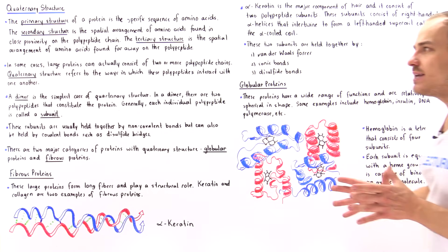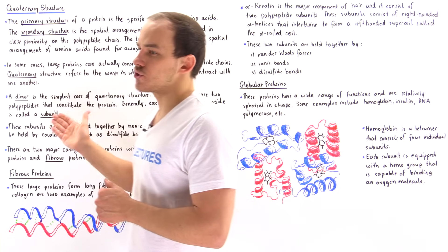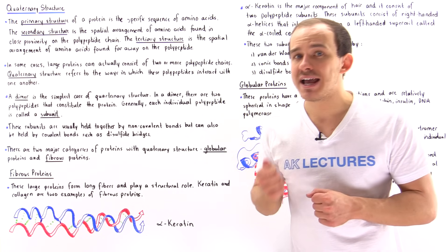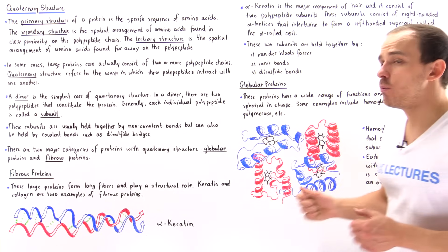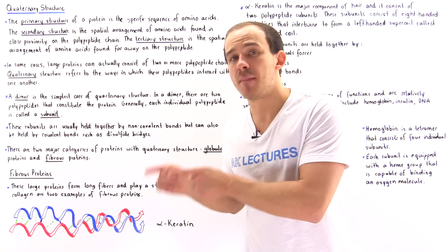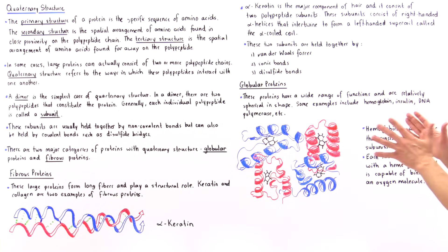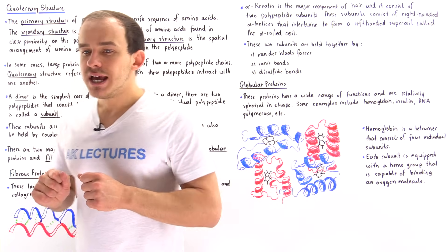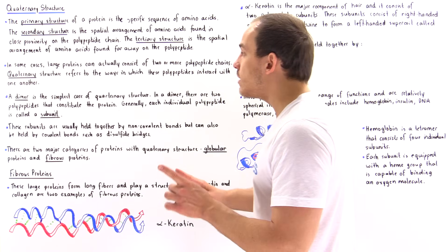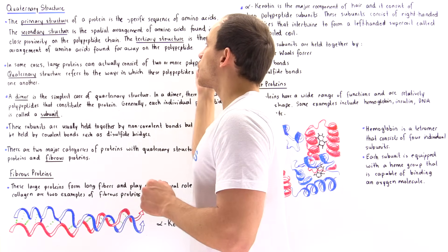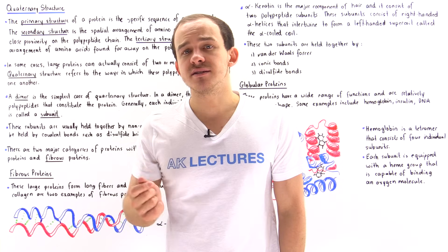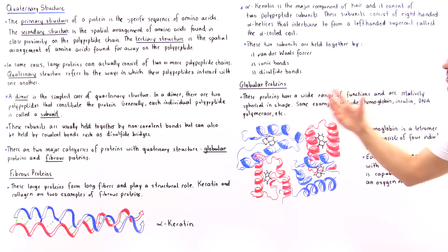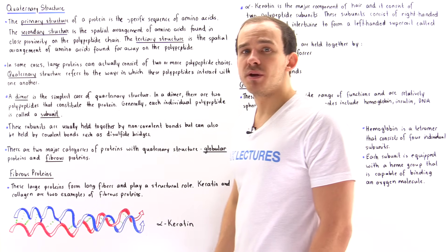Not all proteins contain quaternary structure. For example, myoglobin — an important protein in our muscle — like hemoglobin carries oxygen, but inside the muscle rather than the blood. Unlike hemoglobin, myoglobin only contains tertiary structure because it consists of a single polypeptide chain, not four polypeptide chains like hemoglobin.